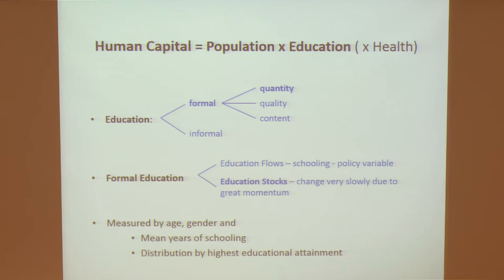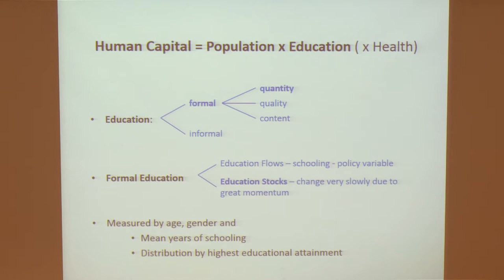There's also the question of content, particularly at higher levels — whether you get a more technical, natural science education or more humanistic. How do we measure education? In the education literature, 98% focus on what we call the education flows — what happens in school, enrollment numbers, what they learn. From a demographic perspective, we look at education stocks — people who already came out of school, the adult population's educational attainment. This is very closely linked to productivity of the labor force, and as with any stock, they change very slowly, with great momentum, making demographic methods very appropriate for modeling these stocks.